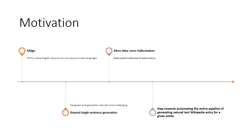It also puts forward the dataset for this task. Exceline focuses on only single sentence generation, wherein given a set of facts, you generate one sentence. We explore the problem of paragraph-level generation, which is a naturally more challenging task.